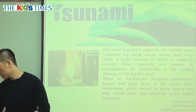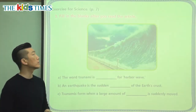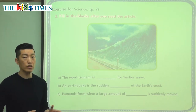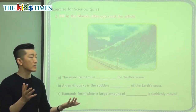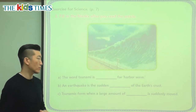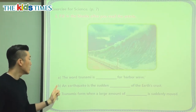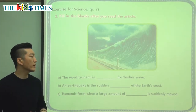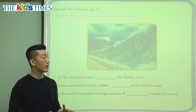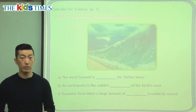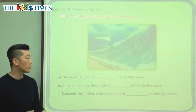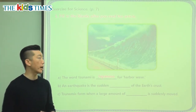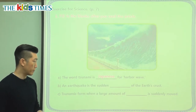Let's take a look at our comprehension questions for today. Let's fill in the blank. You can see in the picture what it looks like in a tsunami — very, very high waves that slam into the land and cause a lot of damage. The first question says: 'The word tsunami is blank for harbor wave.' So what language does 'tsunami' come from? We learned about it — it's from our neighbors in Japan, so it's Japanese. It comes from the Japanese language.